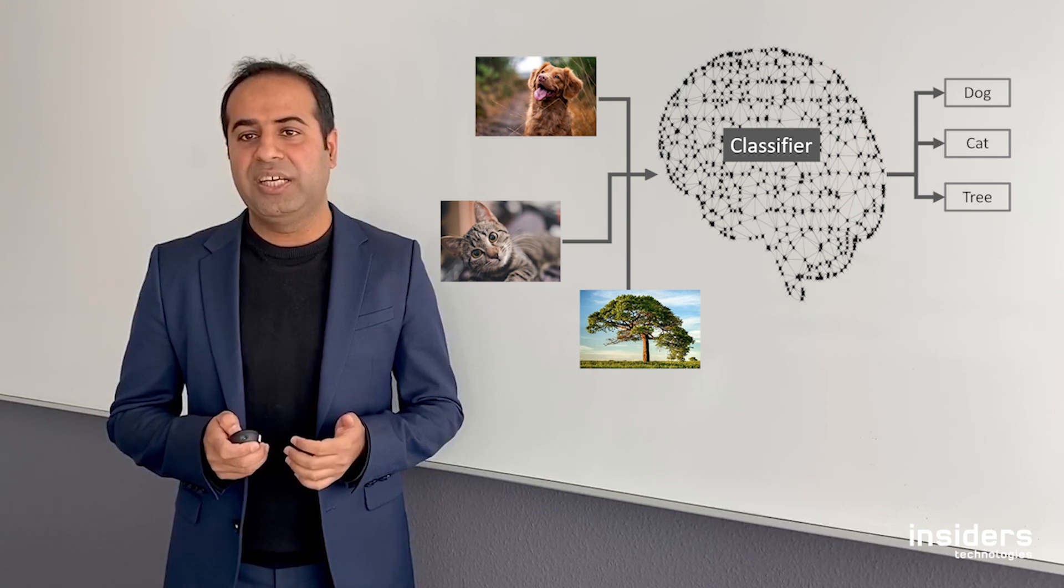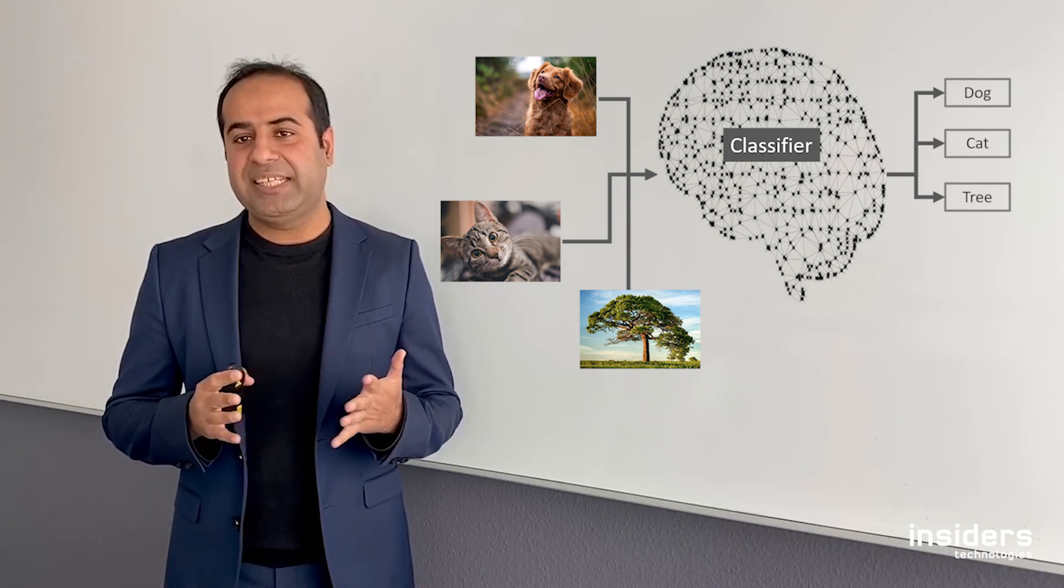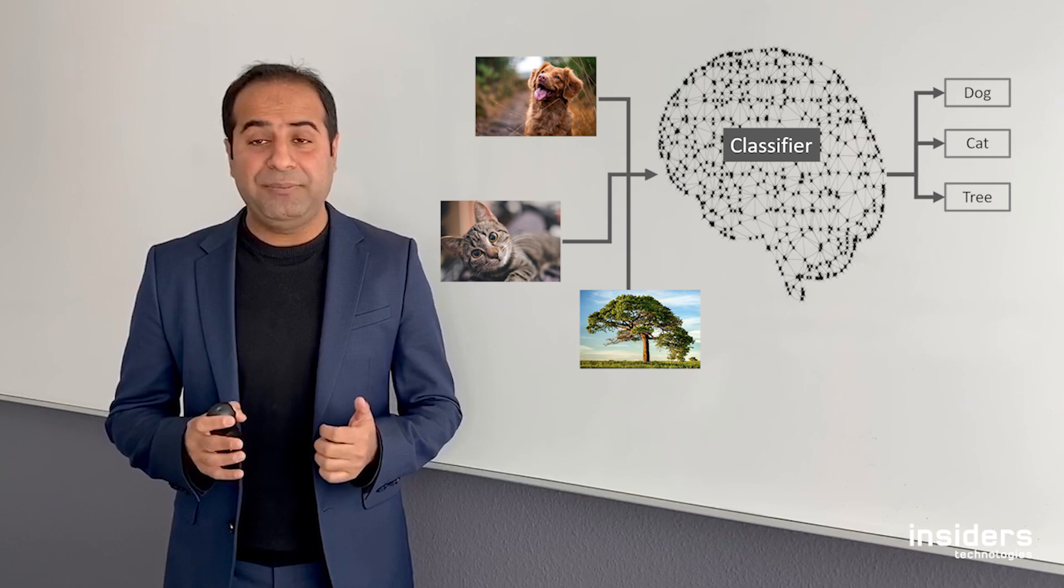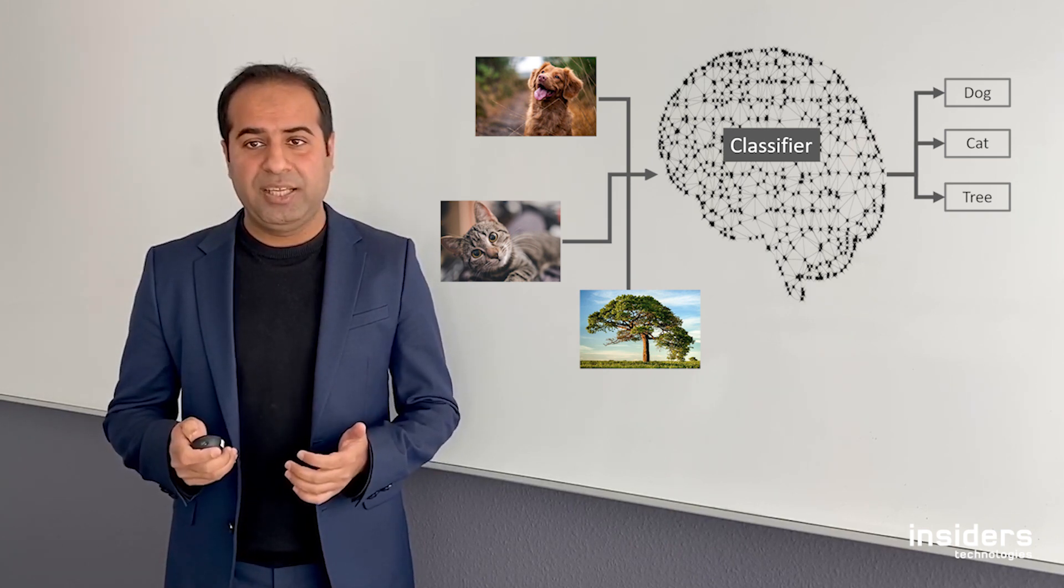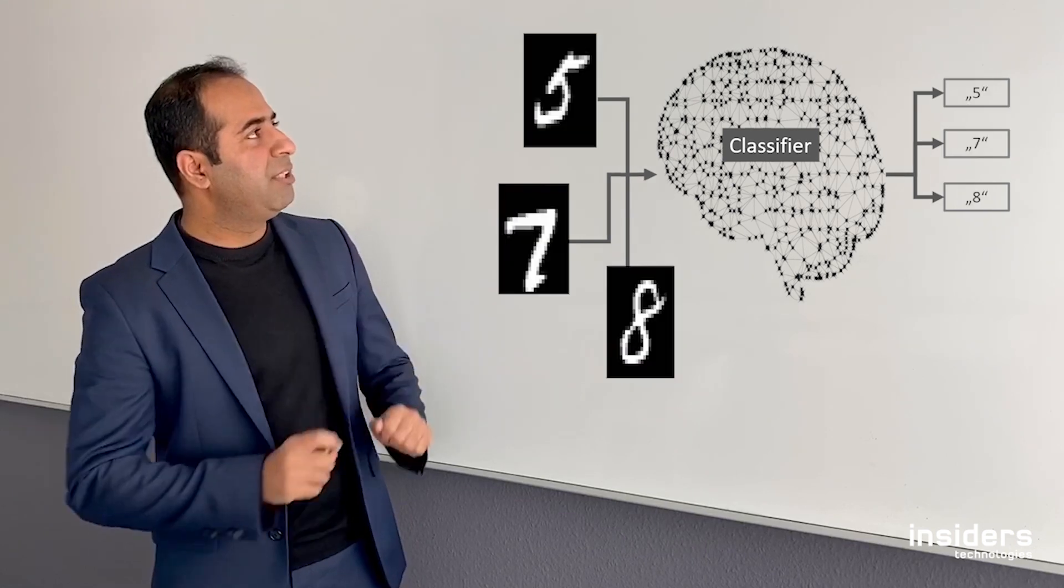If a program is able to recognize that in one of the images there is a dog, in the second image there is a cat, and in the third image there is a tree, then we say that this program is exhibiting artificial intelligence.